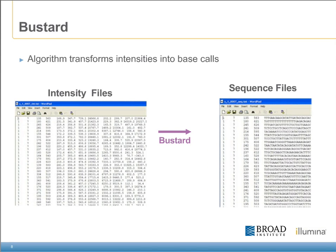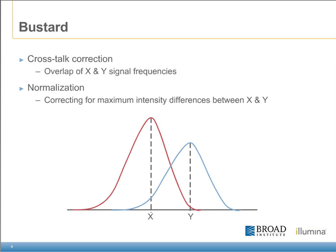The second module within the primary analysis is called Bustard. Bustard uses the intensity files as an input and generates the sequencing files as an output. The algorithms within Bustard translate the intensity metrics into base calls for each of the cycles at each read along the flow cell. Within Bustard, a number of additional tasks are performed, including crosstalk correction and normalization. The crosstalk correction tries to account for any signal overlap that happens between some of the different bases. Some of the dyes used within the chemistry have very similar wavelengths and can often bleed over between channels.